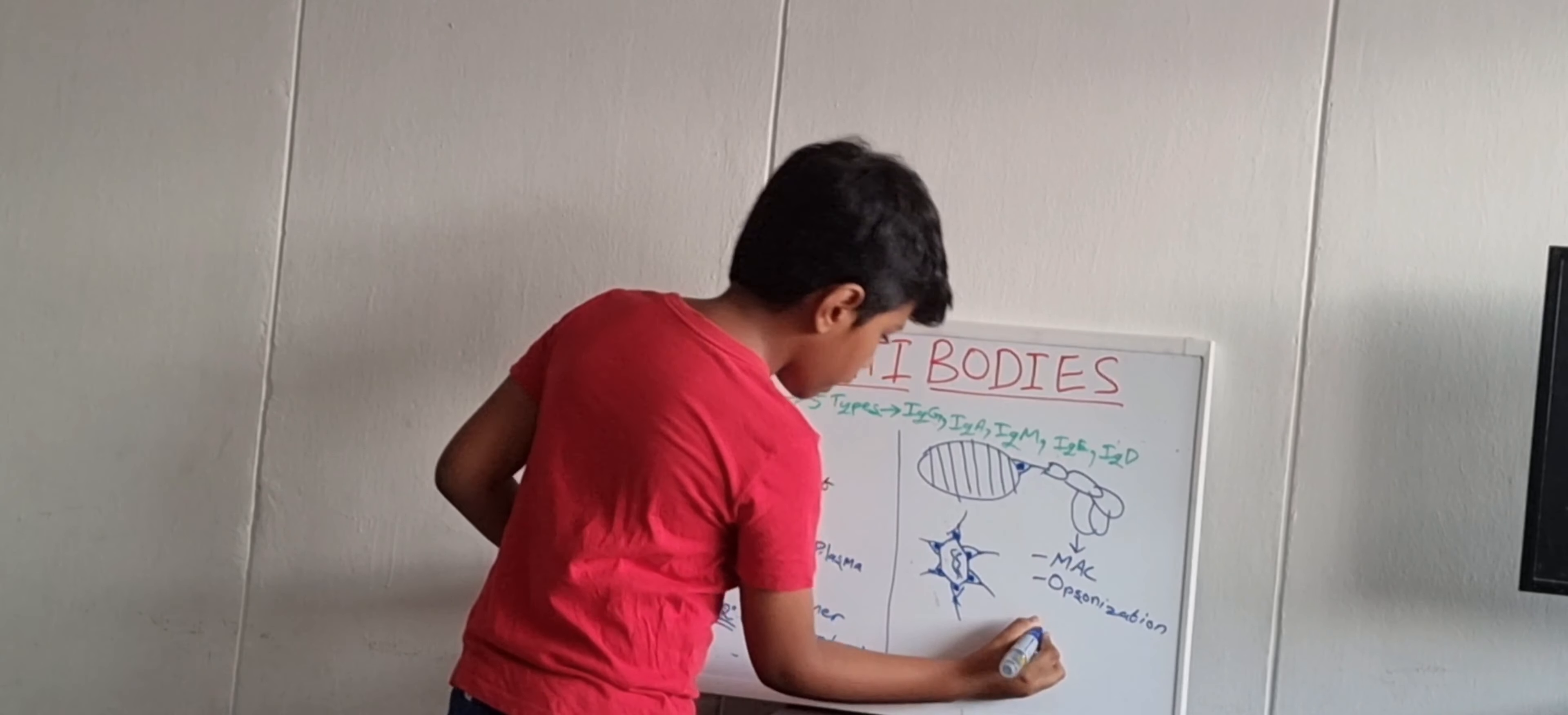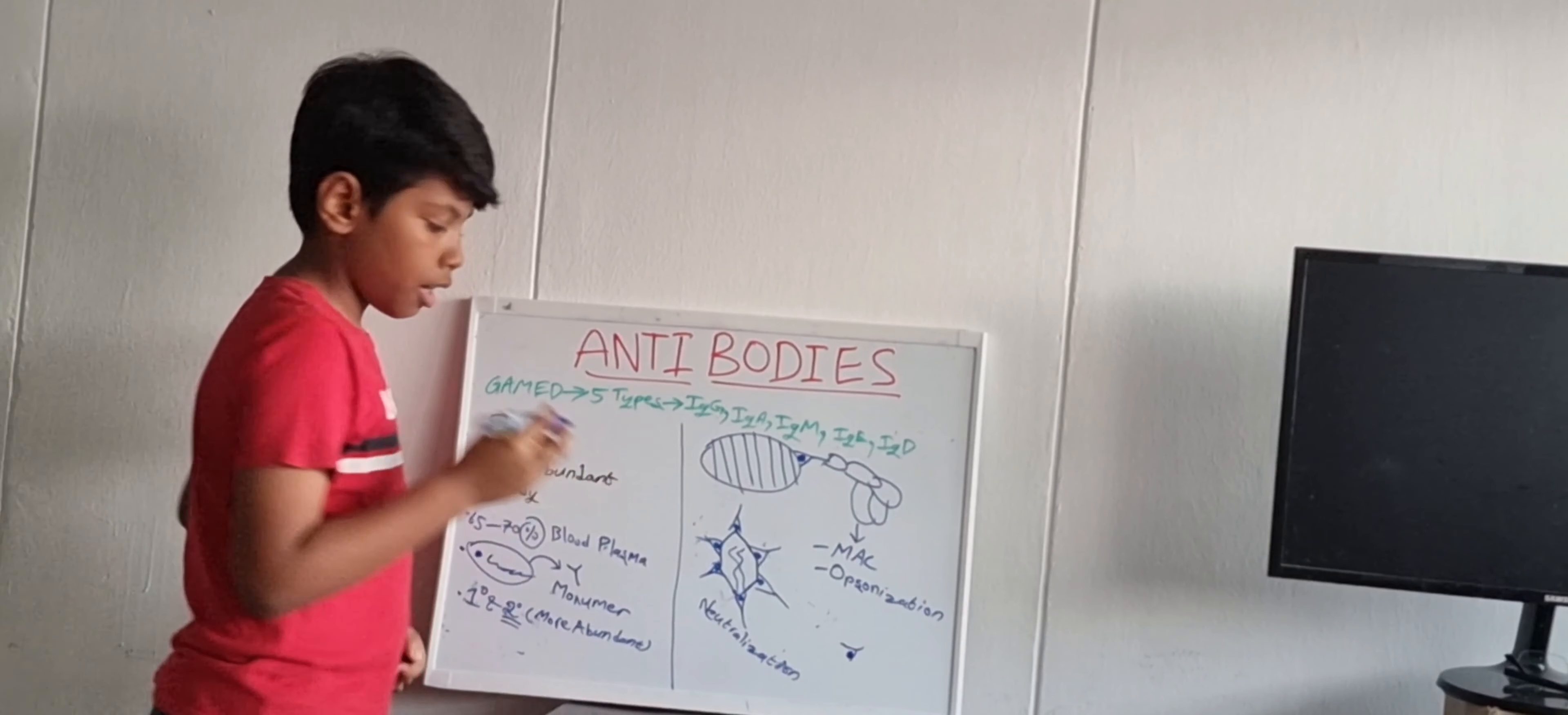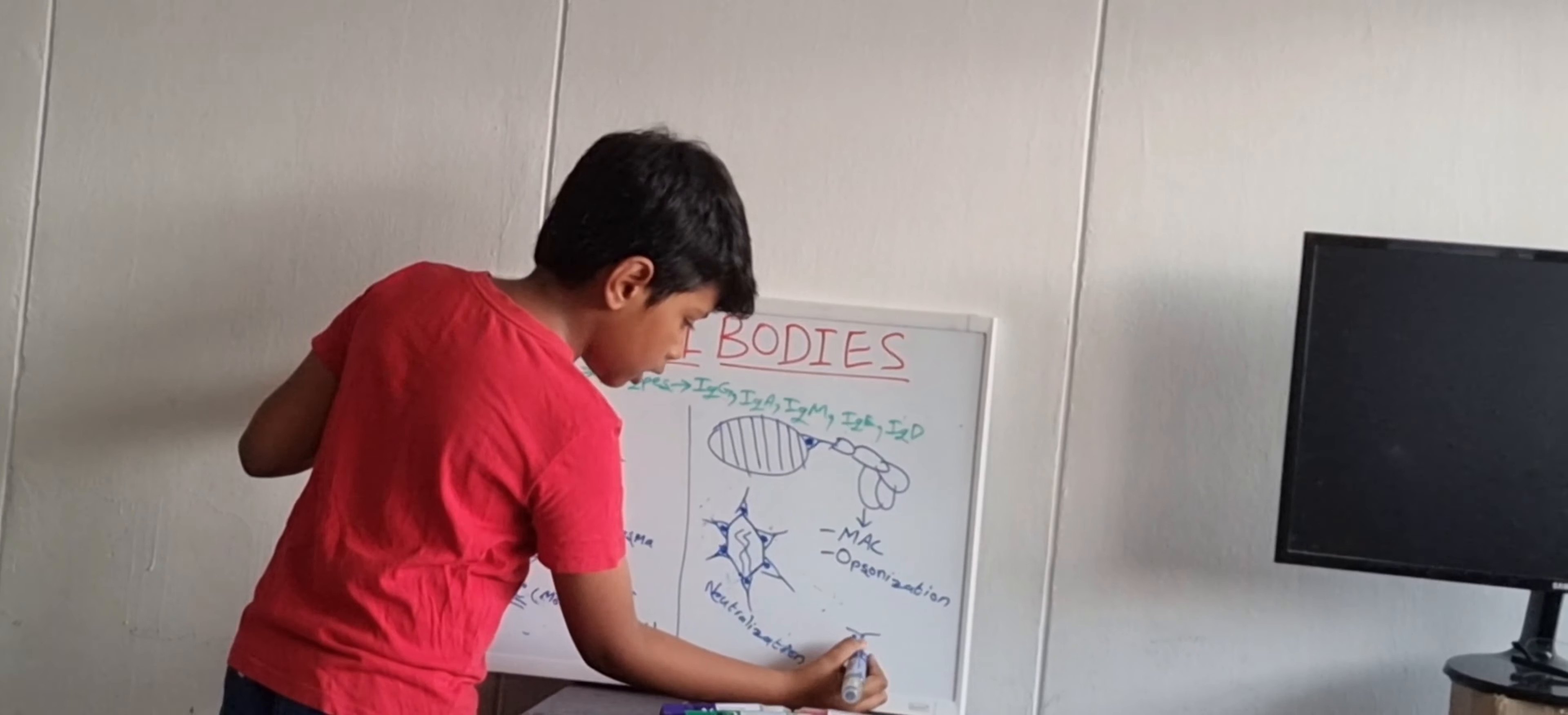Now, when there is a free antigen circulating around the body or should I say some blood, then these IgG can enhance the opsonization or phagocytosis. So, what is this full process called? This is called as precipitation.